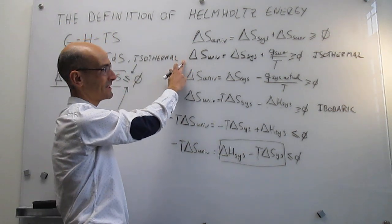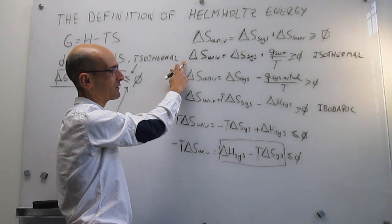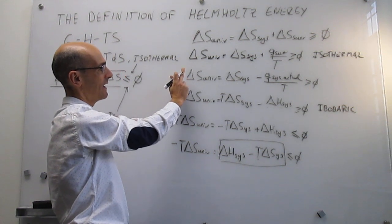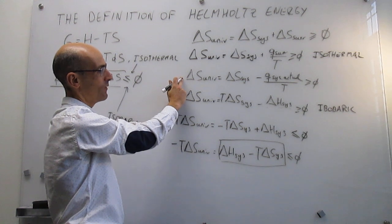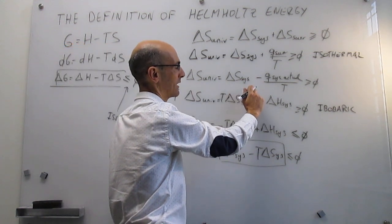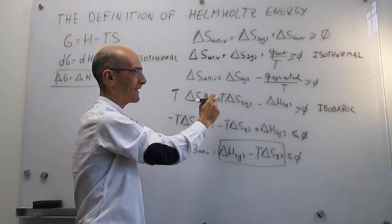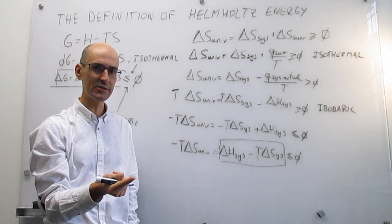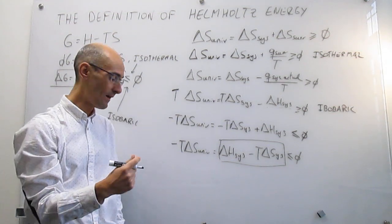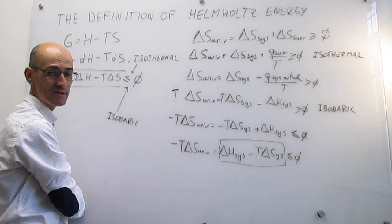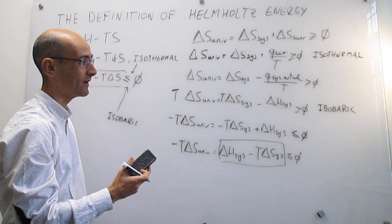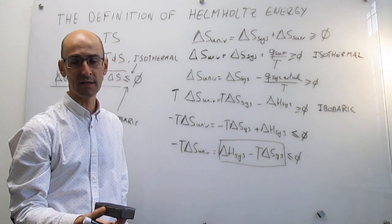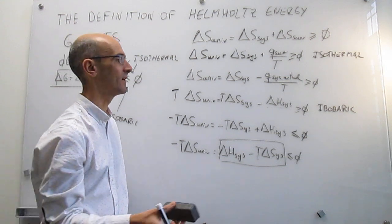We assume that the process is isothermal — there's thermal equilibrium between the system and surroundings. In the Gibbs energy, what we had done was to assume that the process was isobaric. But now we change, and we're going to assume that the process is not isobaric but isochoric or isometric, which means constant volume.